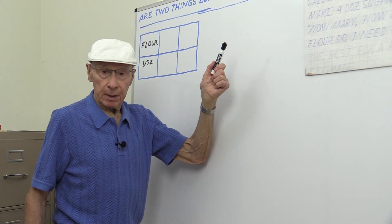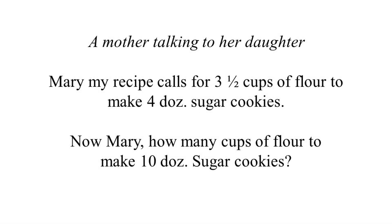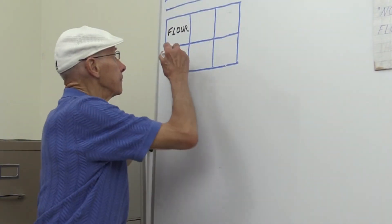Now, in order to find out if this is a candidate for a ratio and proportion type solution, it must meet this qualification: are there two things being compared? Well, the first thing is the cups to dozens of cookies to cups that we don't know to 10 dozen cookies. So we have two ratios here: flour, the first ratio is 3.5...